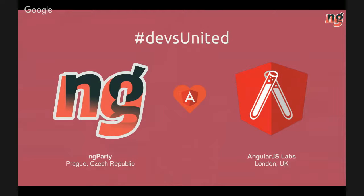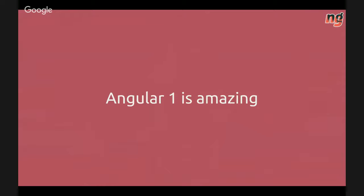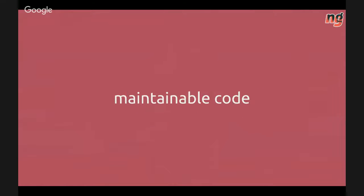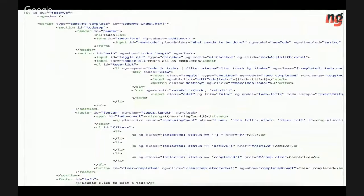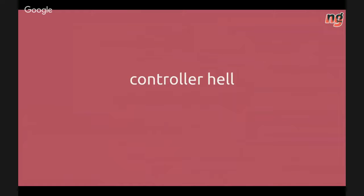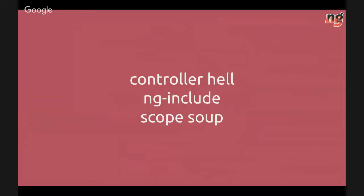Let's go to the topic. Angular 1 is amazing, right? It gives us separation of concerns, testing support, declarative HTML, and it forces you to write maintainable code. But when we started to write our code it looked like spaghetti — it wasn't very maintainable. We did it all wrong at the beginning: we introduced controller hell, ng-include all the way, scope soup, and many other anti-patterns.